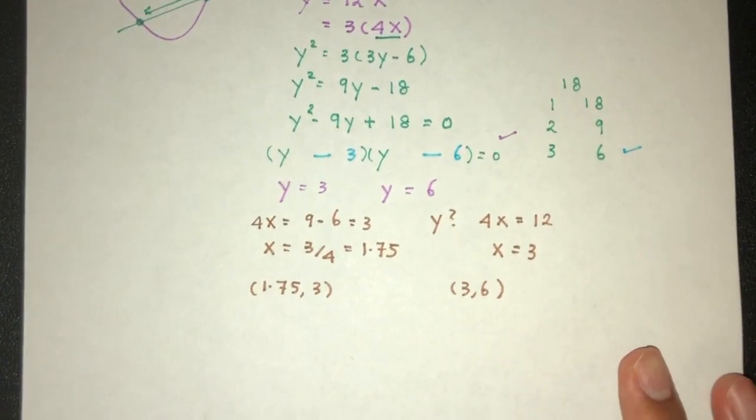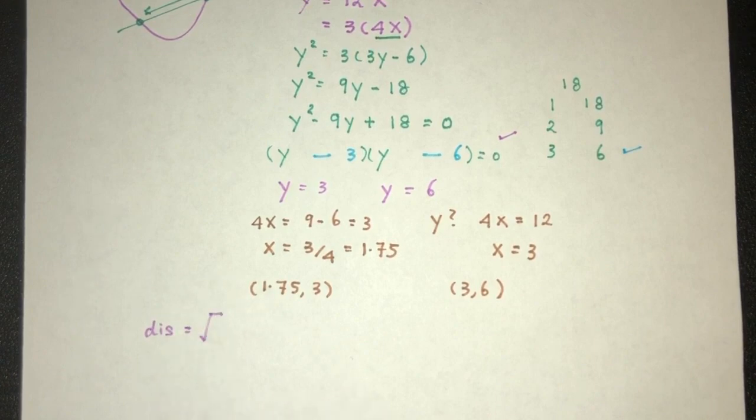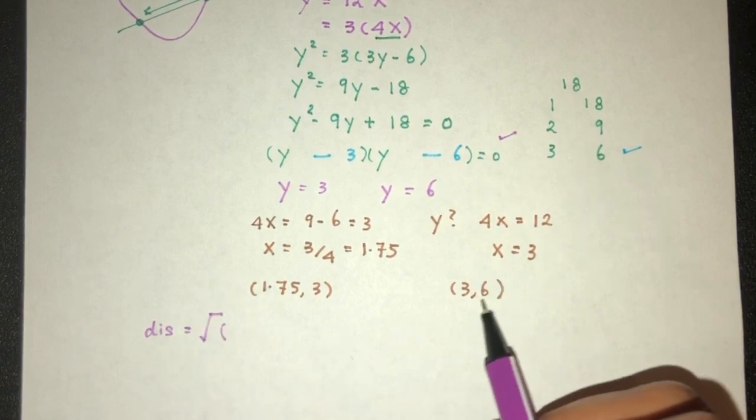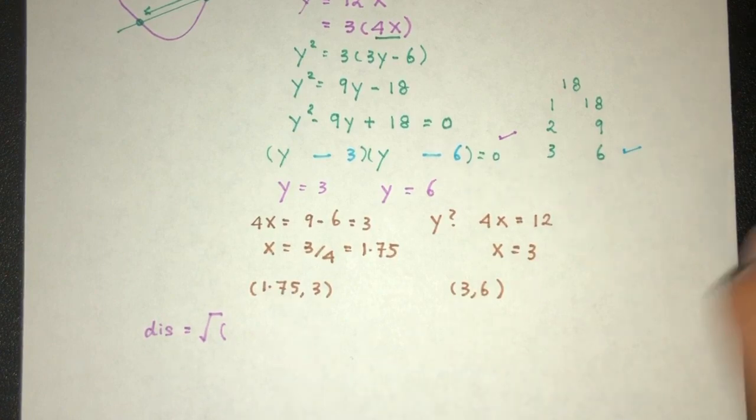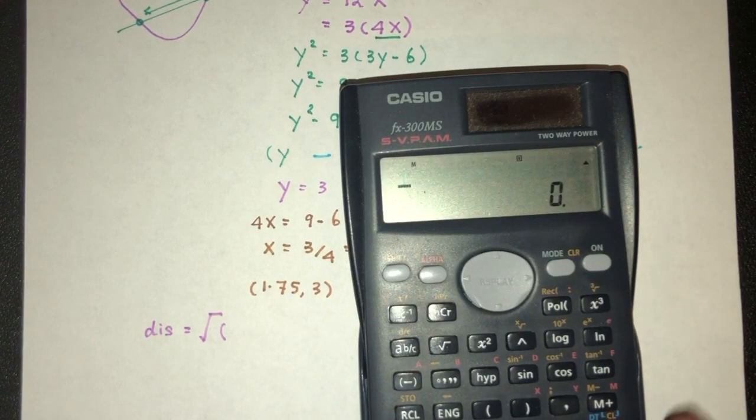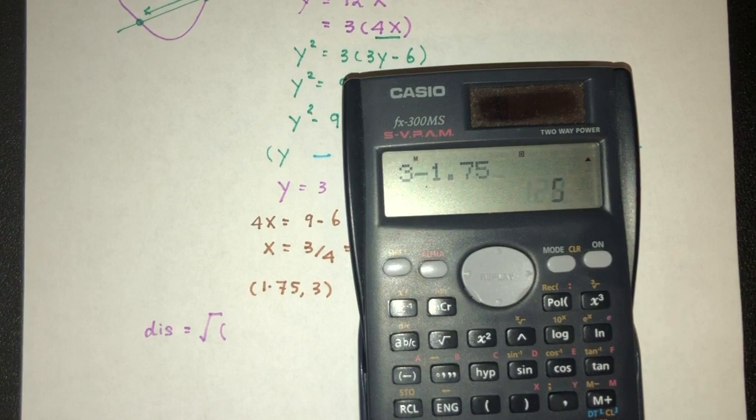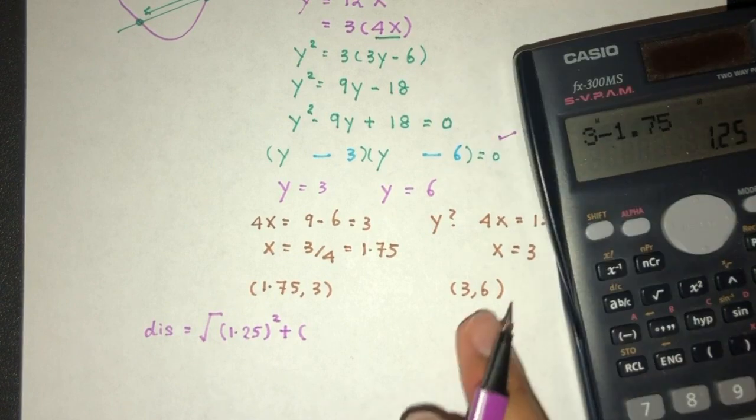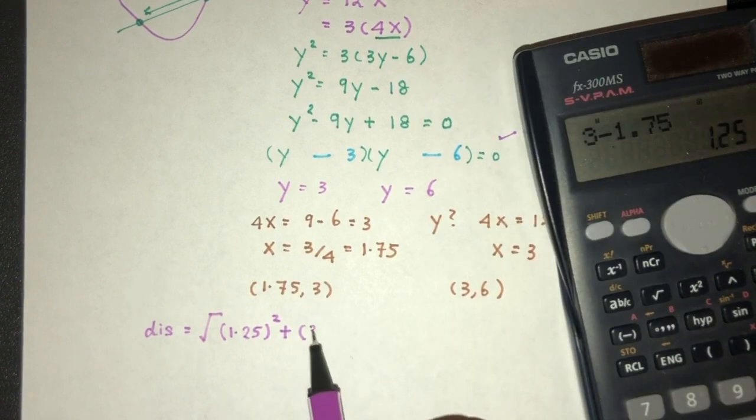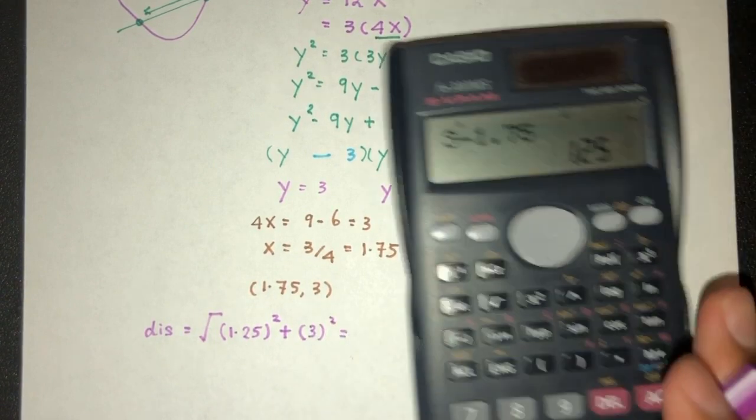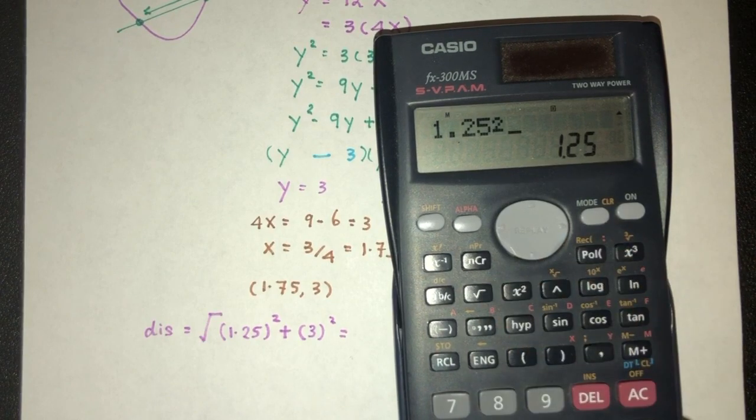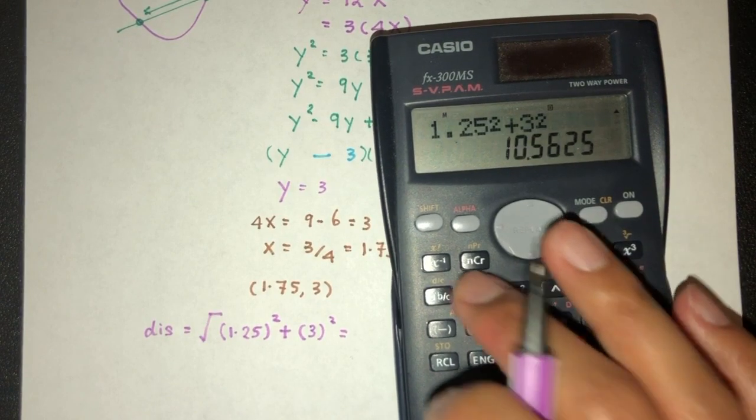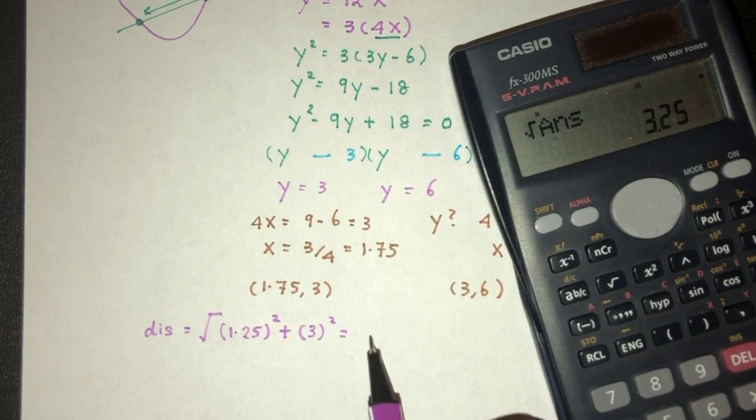How can you do that? We have to use the formula distance is equal to root. That will be x2 minus x1. 3 minus 1.75 should be 1.25 square plus the value of this one minus this one. That should be 3 square. So we have 1.25 square plus 3 square. That should be root of answer. That should be 3.25.